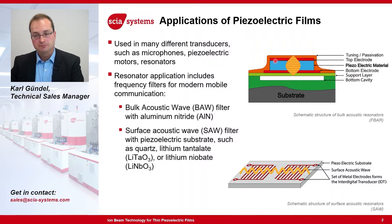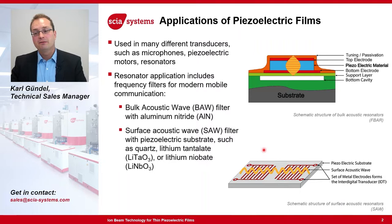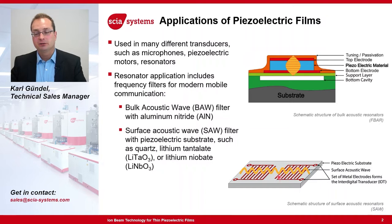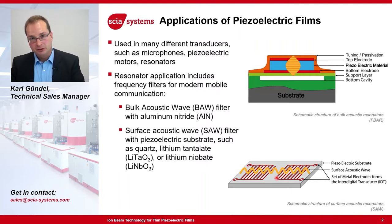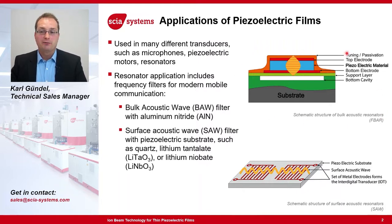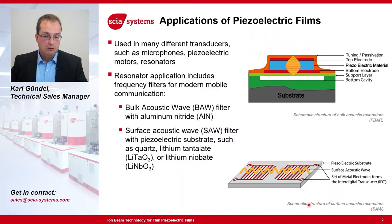For the surface acoustic wave filter, the acoustic wave is generated on the surface of the device, and by the complex structures of these interdigital transducers — these electrode structures — the acoustic signal at the surface will then also transduce into an electrical signal. The difference is that the bulk acoustic wave filter is used for higher frequencies, while the surface acoustic wave filters are used mainly in the lower frequency range.